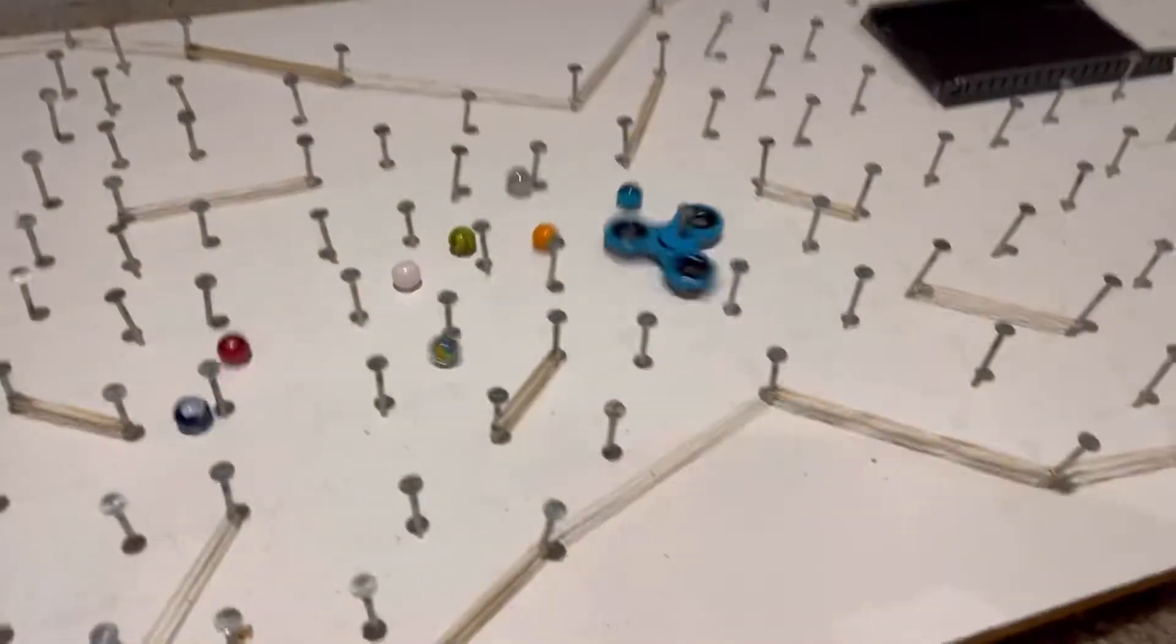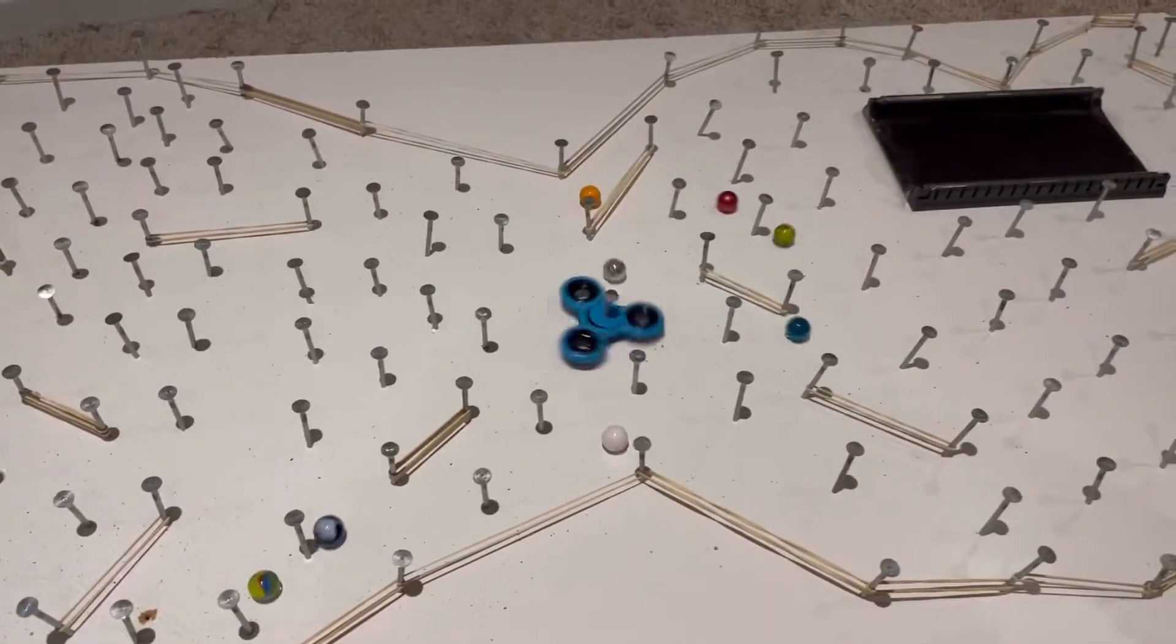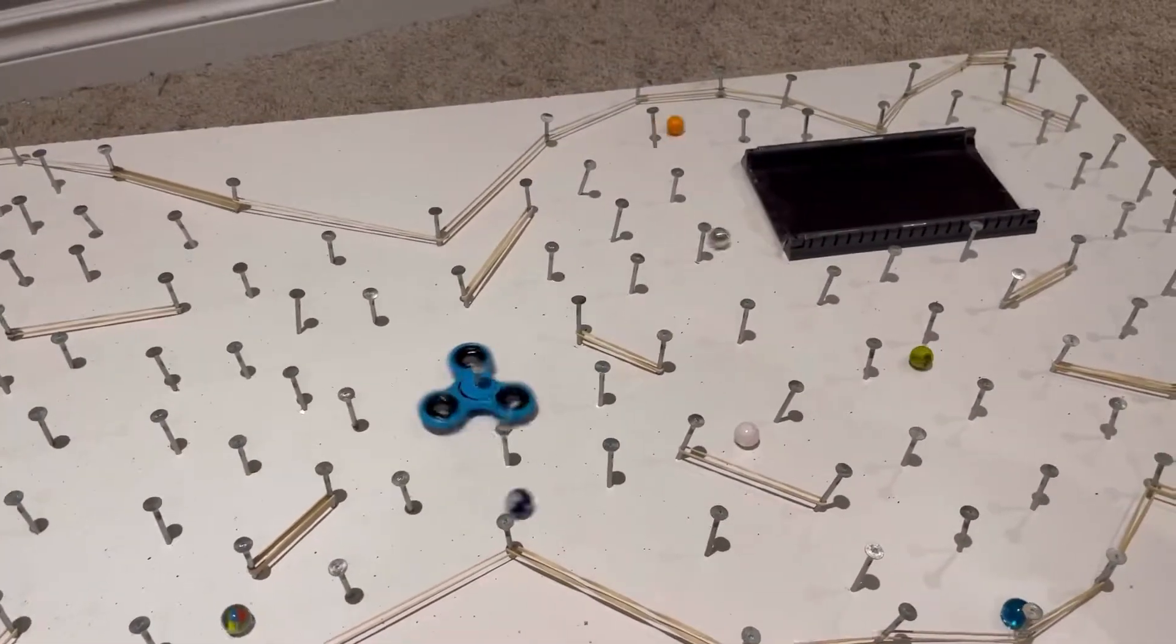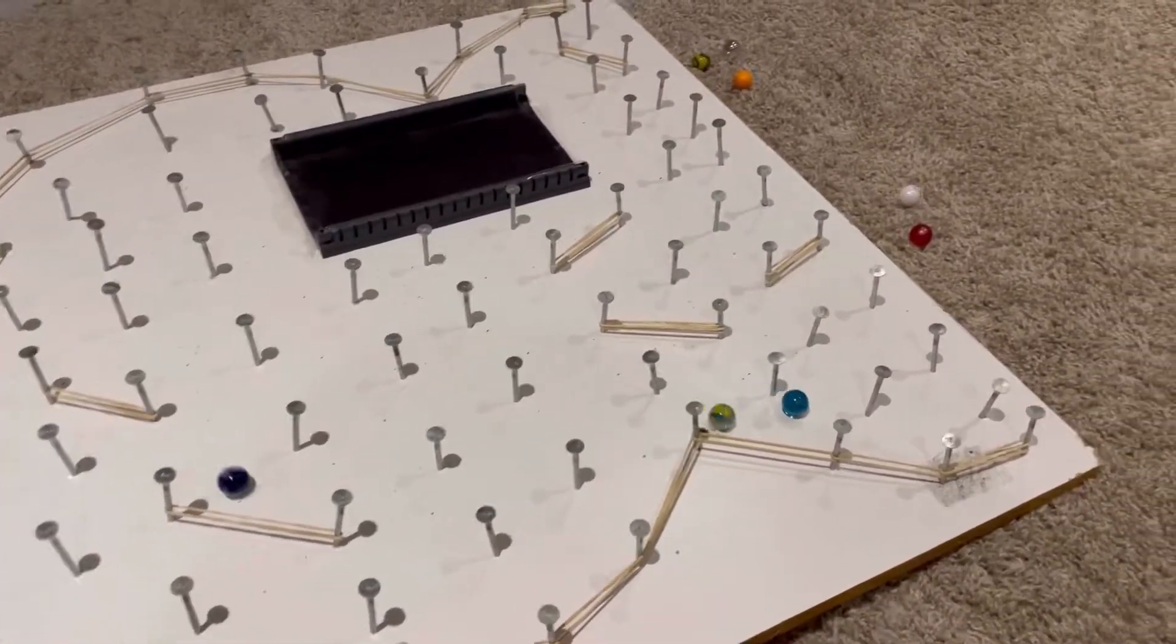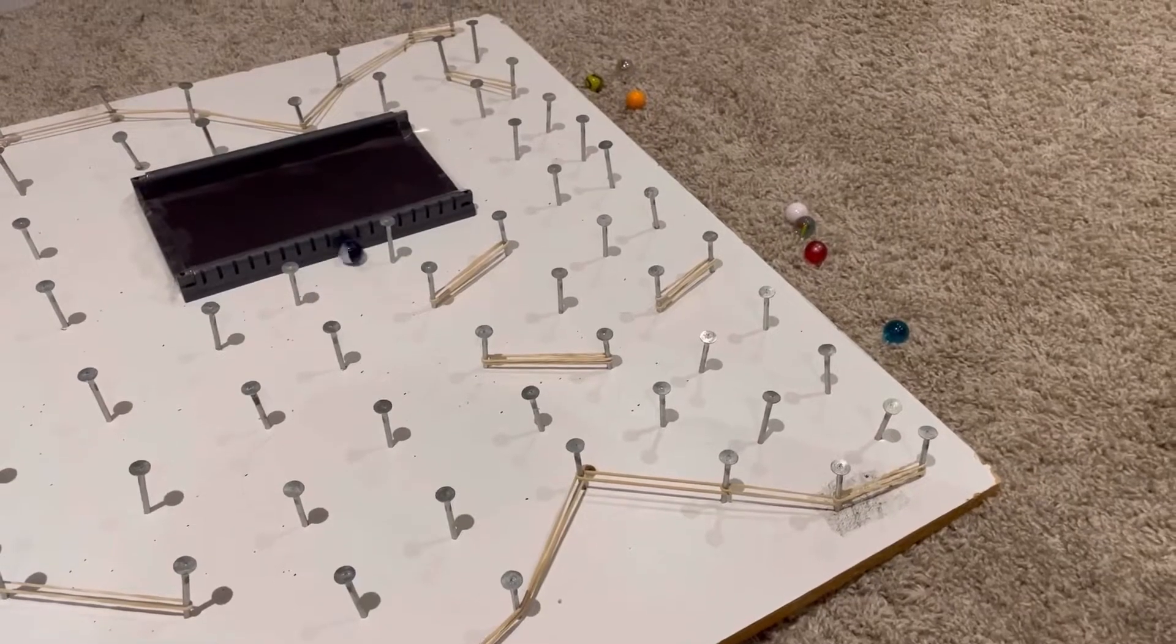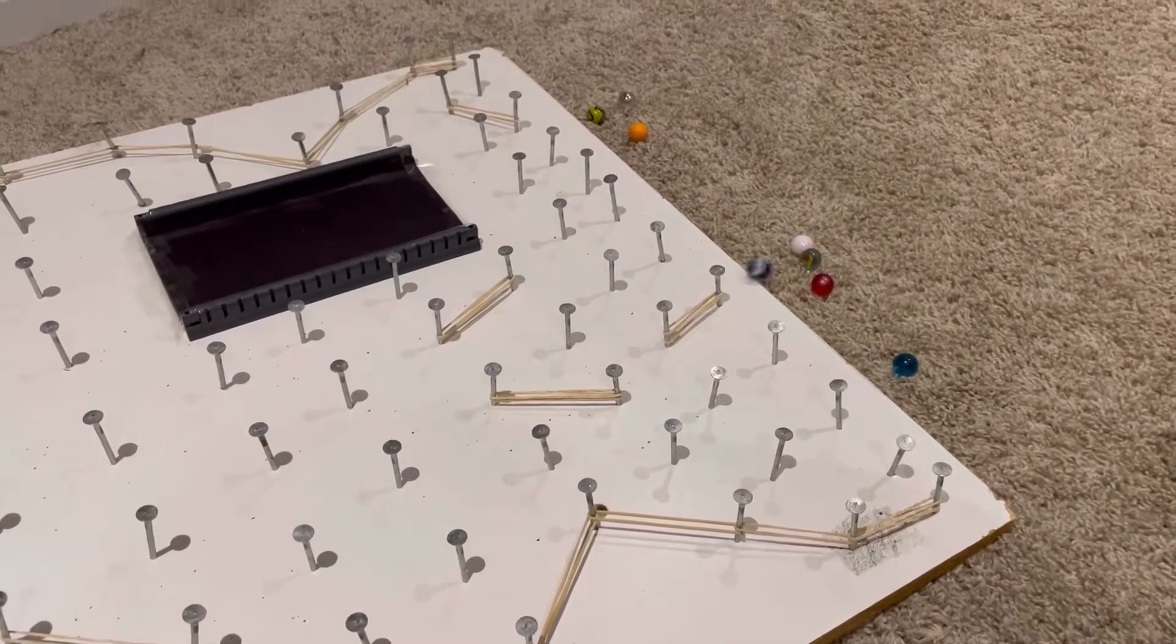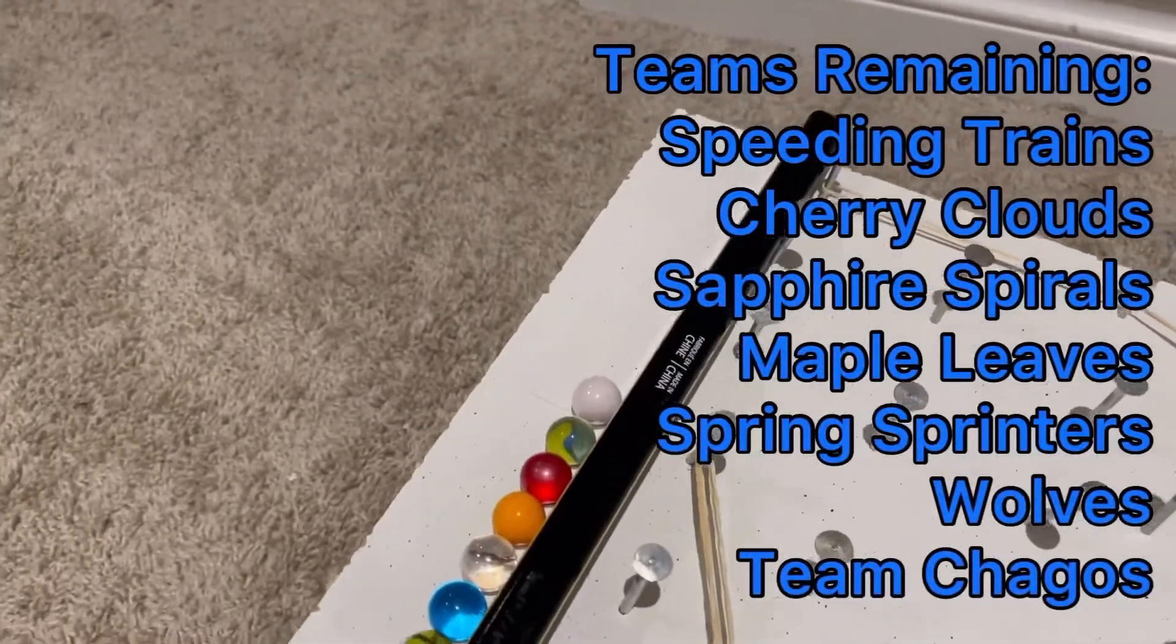Team Chagos had a great start, but look at the Fidget Spinner causing chaos, launching some marbles to the far side. Wolves, you can see them taking that fast route over the Corsetti Marble Drone path. That gives you a bit of a shortcut and will almost guarantee you advancement if you can get there soon enough.